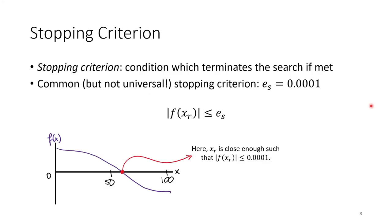How do we know when to stop the algorithm? We use what's called a stopping criterion. A stopping criterion is essentially a tolerance.